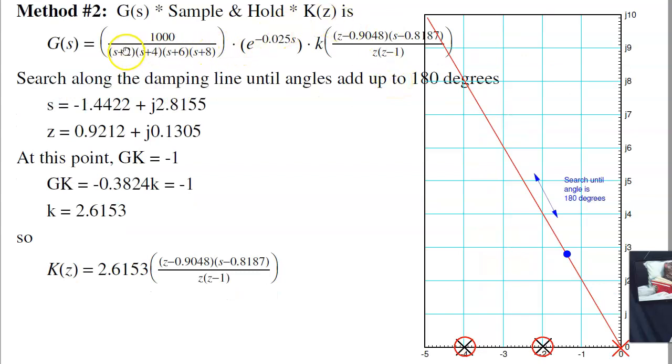Again, the second method is here's your plant. Here's your half sample delay. Here's k of z. Where I get these two is this cancels the pole at minus two. Again, the conversion is z to the st. So that's minus two in the z-plane. This is minus four in the z-plane. Add a pole at zero, add a pole at plus one, and now iterate. Search up and down this line until the angle is add up to 180. And it turns out the point in the s-plane is minus 1.44 plus j2.81. The corresponding point in the z-plane, z is e to the st, is 0.92 plus j.13 right here. At that point, g times k is minus one. Phase is right, gain is wrong, so add a gain of 2.61. Again, almost the same as this solution. This one's actually more accurate.